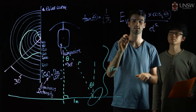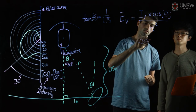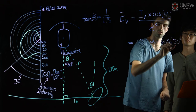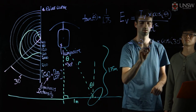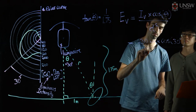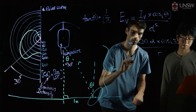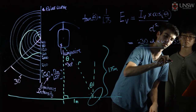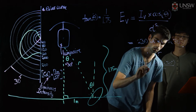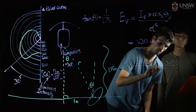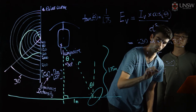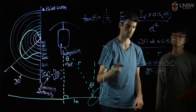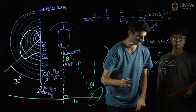Figure out that angle, and now we substitute all our values in. We have 230 candelas divided by our R squared value, and you'll receive in the end a value of 50 lux.